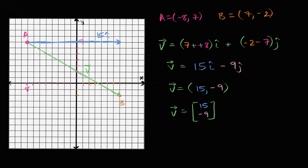And then the vector negative 9j, well, it's going to go down nine. So one, two, three, four, five, six, seven, eight, nine. So negative 9j is going to look like this. Negative 9j. And you see, if you take 15i plus negative 9j, you're going to get our entire vector V, which is exactly what we wrote here.